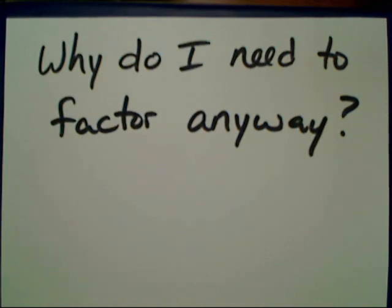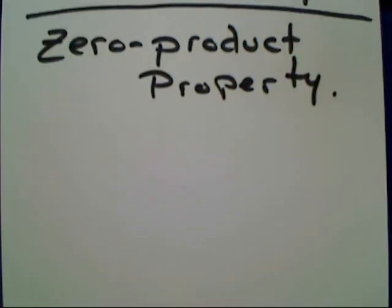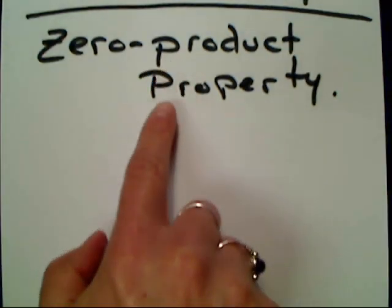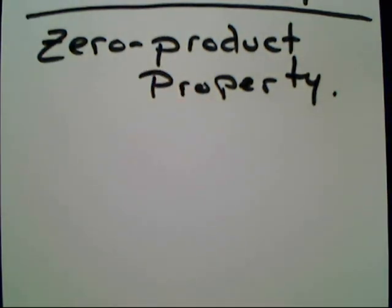How are we going to solve stuff? This is the great thing, because to solve by factoring means we get to use my favorite property: the zero product property. The zero product property is a very simple property. Your book actually calls it a law, but I like the alliteration with 'product property' together — it makes more sense to me.